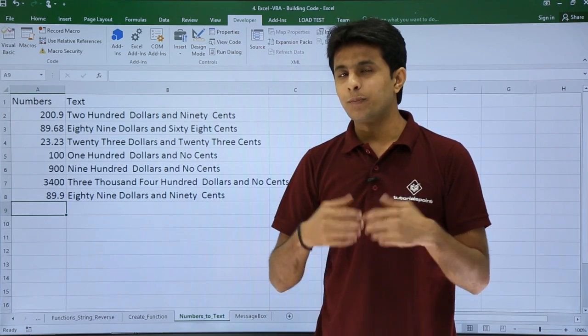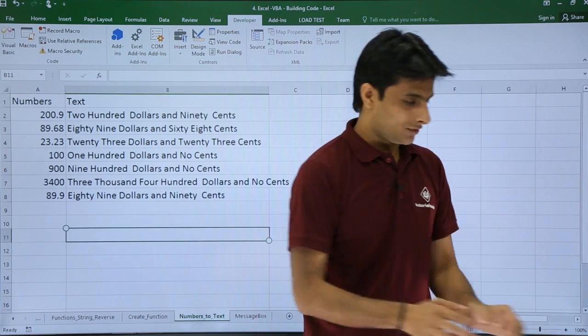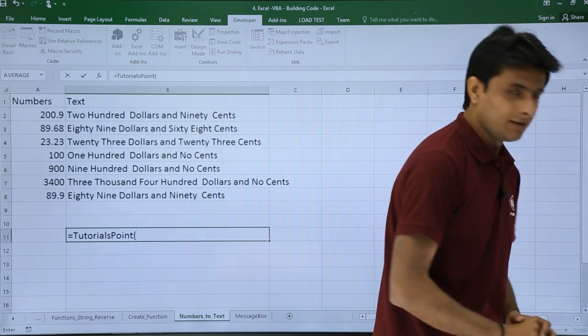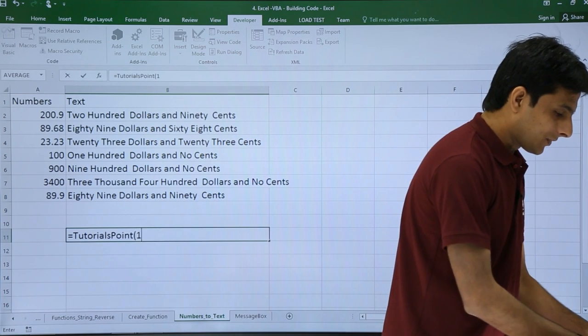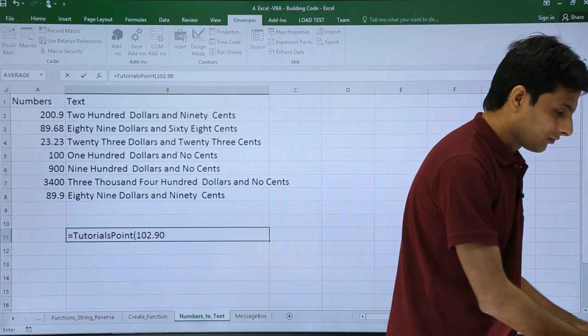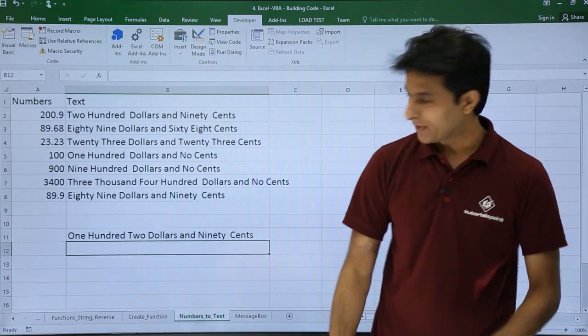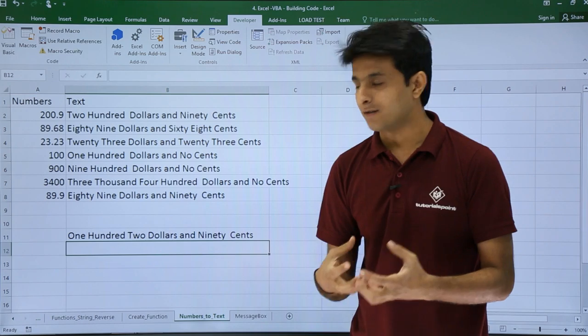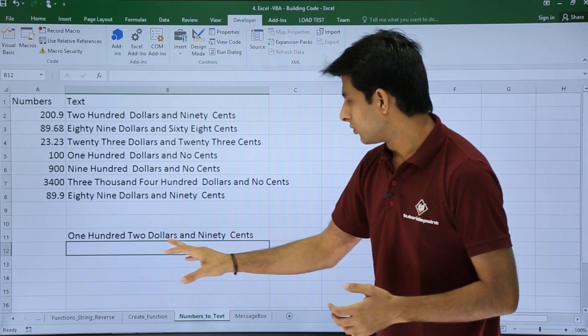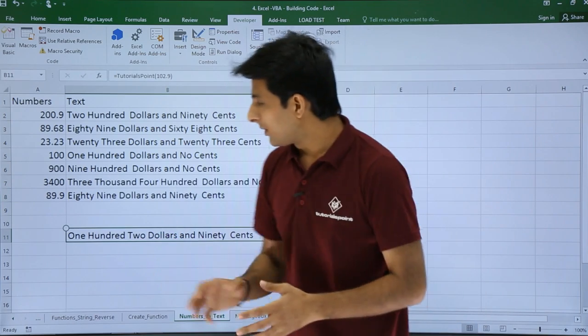It is very simple - just copy the code, paste into that place, and you can type it here. There's one more example: =TutorialsPoint. Remember this name can be changed if you go back to the coding part. Type 102.90 and press Enter. Once you press Enter, that number has been converted to text: One Hundred Two Dollars and Ninety Cents.